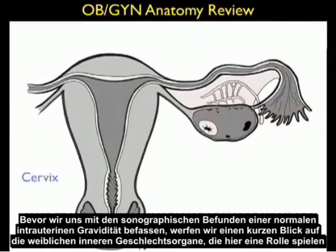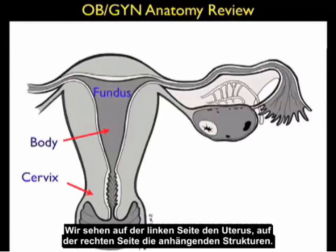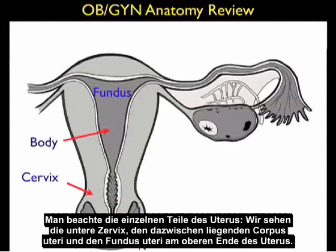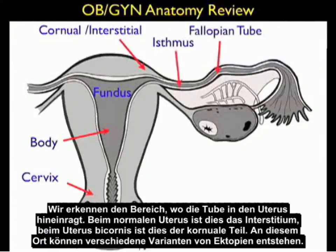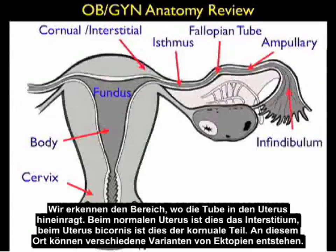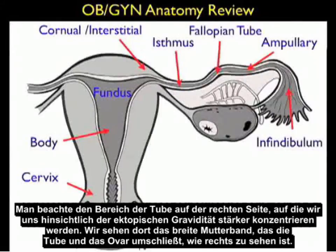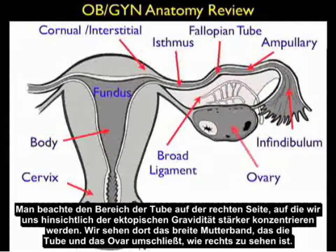Before launching into the sonographic findings of a normal intrauterine pregnancy, let's quickly review the OBGYN anatomy important for this application. We see the uterus to the left and adnexa to the right. Notice the areas of the uterus: the lower cervix, the intermediate body, and the fundal region towards the top. The fundal region is where we define an intrauterine pregnancy to be located. We see the area where the fallopian tube enters the uterus — the interstitial region in a normal uterus and the corneal region in a bicornuate uterus — where some variants of ectopics can implant. Notice the areas of the fallopian tube to the right, the broad ligament encasing the fallopian tube and the ovary.